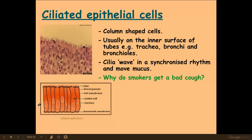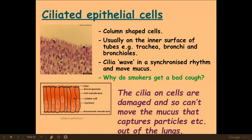Ciliated epithelial cells are column-shaped cells with hair-like structures called cilia on the top. They are found on the surface of the trachea and the bronchi. Goblet cells secrete mucus which traps dust particles and pathogens that enter the lungs, and the cilia waft this mucus to the back of the throat where it is coughed up or swallowed.